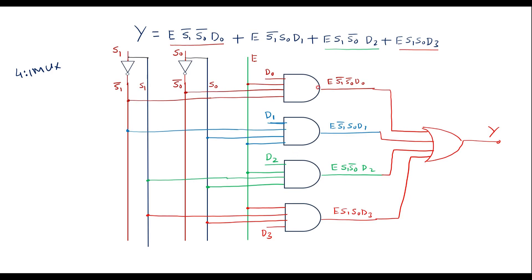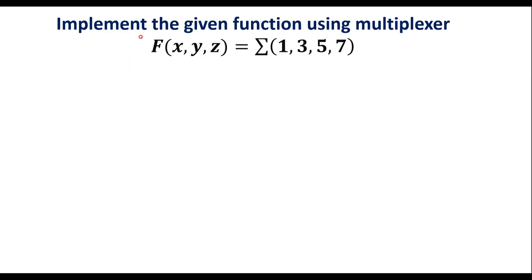Each AND gate produces an output of 1 if the data input value is 1; if the data input value is 0, it will produce an output of 0. Now let me take one example so we can understand better. Implement the given function using a multiplexer: f(x, y, z) with minterms 1, 3, 5, 7. Here x, y, z indicate the select lines of the multiplexer. Since there are 3 select lines, we have 2³ = 8, so we are supposed to take an 8-to-1 multiplexer. The minterms are 1, 3, 5, 7.